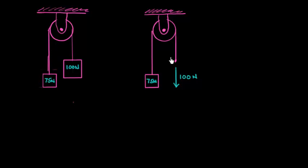In this system on the right we've got a somewhat similar situation. We've got the same 75 newton block on the left here and still attached to a string that's wrapped around a pulley and on the other side or the other end of that string we have a 100 newton force directly applied to that end of the string.